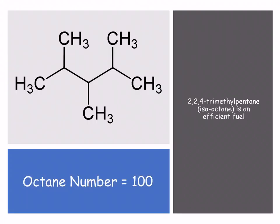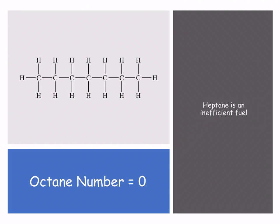2,2,4-trimethylpentane has a main chain of five carbons all joined by single bonds, as it is an alkane. At position two there is a CH₃ group, another CH₃ group also at position two, and another methyl group at position four — that's where we get the trimethyl from. Heptane, by contrast, is seven carbons with all single bonds and has an octane number of zero.